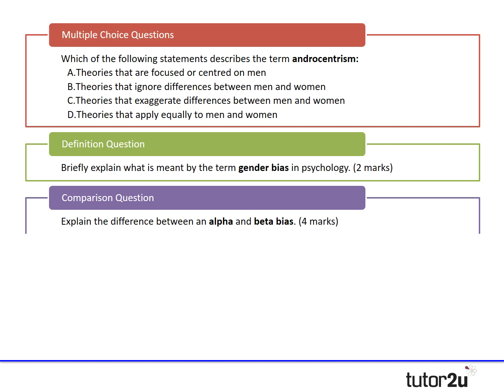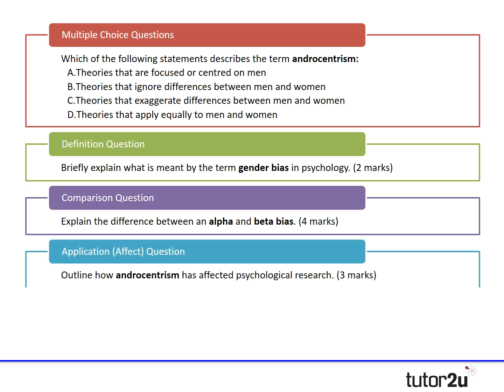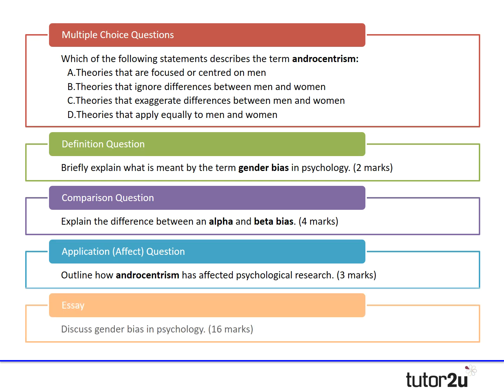Thirdly, you can get a comparison question — these are getting harder. For example: 'Explain the difference between an alpha and a beta bias.' Then there's an application question, such as 'Explain how androcentrism has affected psychological research.' That's not a traditional application requiring an extract, but it certainly requires you to go beyond the question, making it much more difficult. And last but not least — the one students tend to fear most — the essay question, such as: 'Discuss gender bias in psychology.'